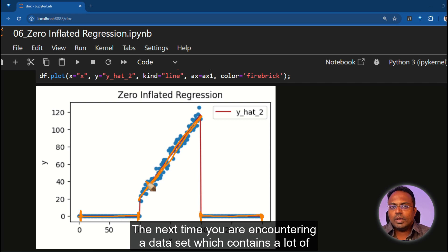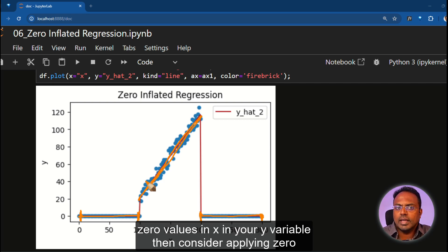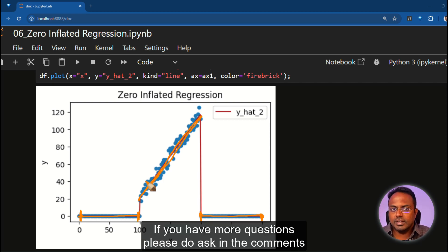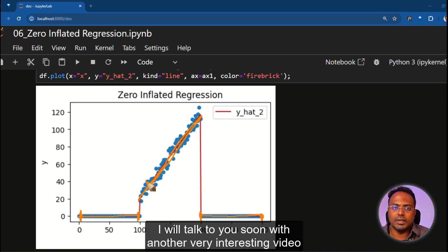The next time you are encountering a dataset which contains a lot of zero values in your Y variable, then consider applying zero inflated regression to correctly predict the zeros present in your Y. I hope everything is clear. If you have more questions, please do ask in the comments. I will talk to you soon with another very interesting video.